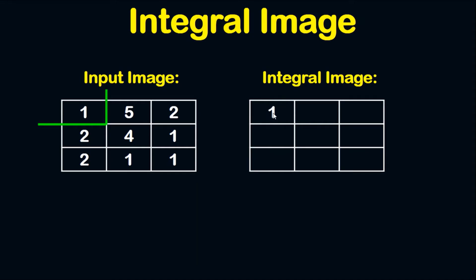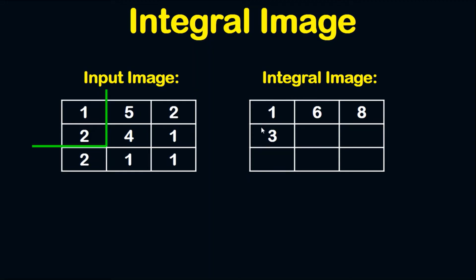Now let's move to the second pixel. Go to its corresponding pixel in the input image, draw a right angle like this, then sum the values: 1 plus 5 is equal to 6. For the third pixel, we draw a right angle like this: 1 plus 5 is equal to 6, 6 plus 2 is equal to 8.